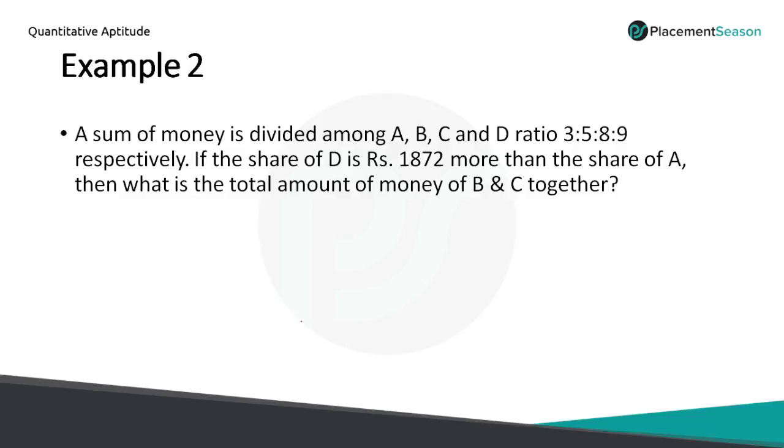Example 2. A sum of money is divided among A, B, C and D in the ratio of 3:5:8:9. If the share of D is Rs 1872 more than the share of A, then what is the total amount of money of B and C together?